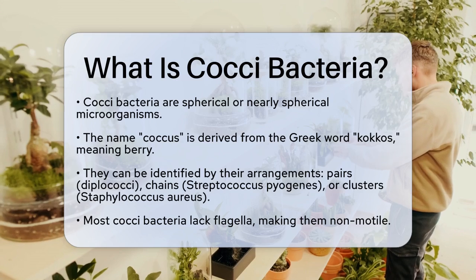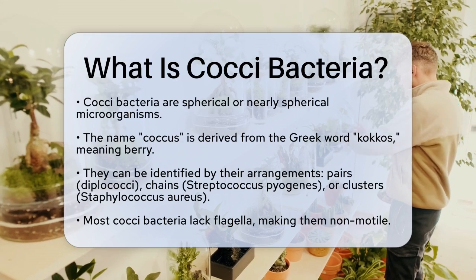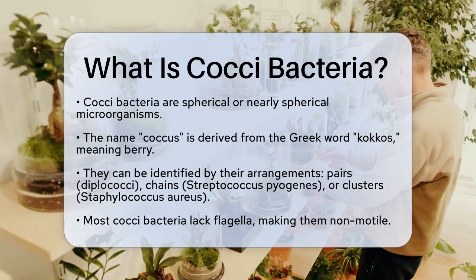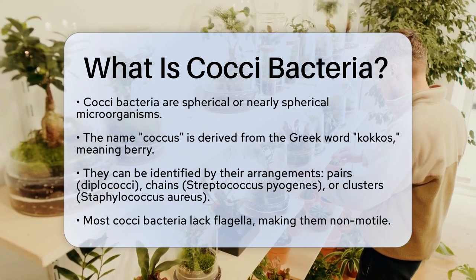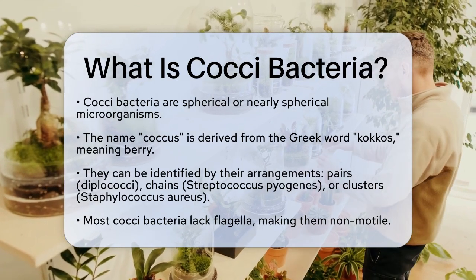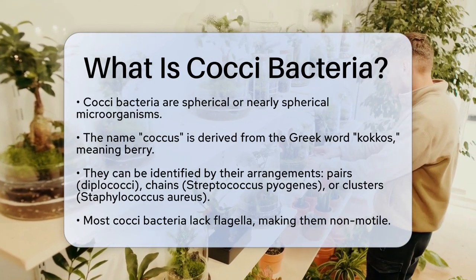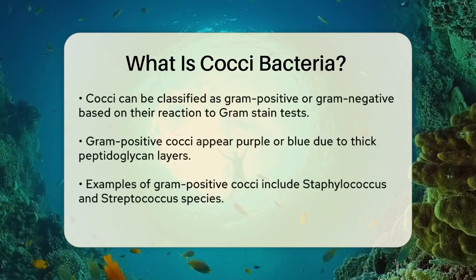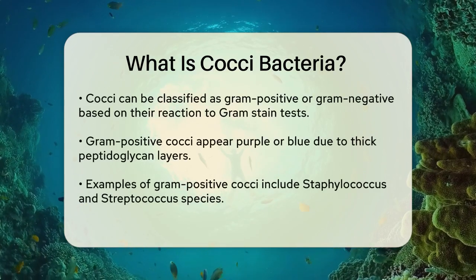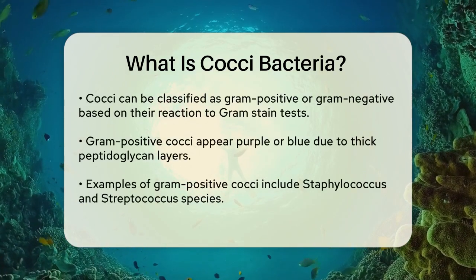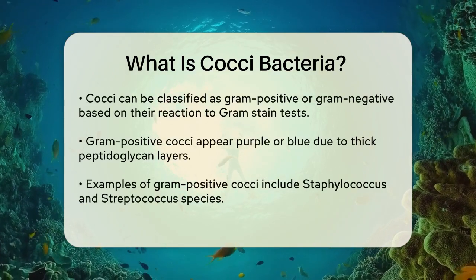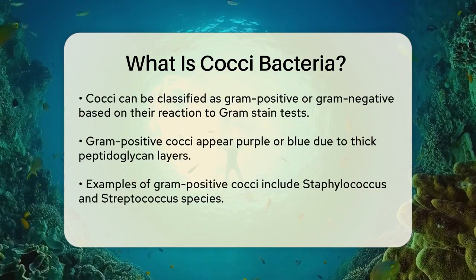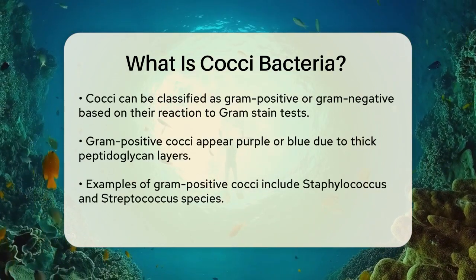For instance, some cocci bacteria grow in pairs, known as diplococci. An example of this is Streptococcus pneumoniae, which often appears as two joined cells. Others form chains, like Streptococcus pyogenes, or they can cluster together in a grape-like fashion, such as Staphylococcus aureus.